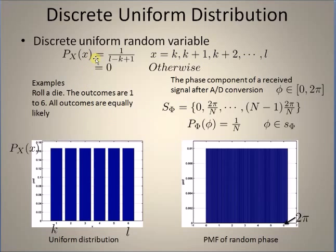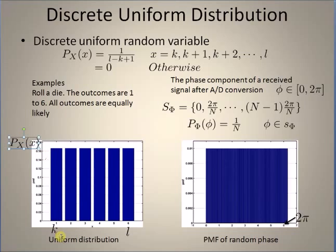Let us look at a couple of examples illustrating this discrete uniform random variable. The first is a simple experiment of rolling a die — you roll a die and count the number of dots on the face. There are six possible outcomes, and if the die is fair, each outcome is equally likely. This means the probability mass function is 1 by 6, since there are six possible outcomes. The plot shows the PMF of this random variable: k equals 1, l equals 6, and the PMF equals 1 over l minus k plus 1, which is 1 over 6 minus 1 plus 1, giving 1 by 6. The PMF is 1 by 6 for each value of x from 1 to 6, and 0 for all other values.